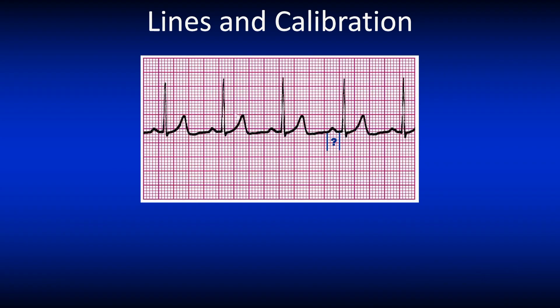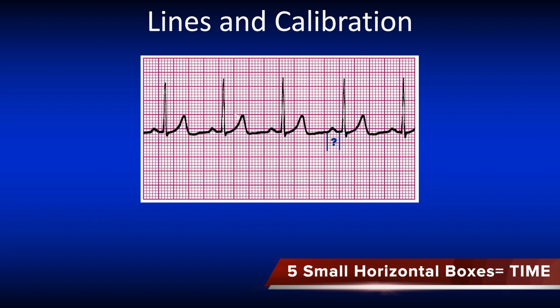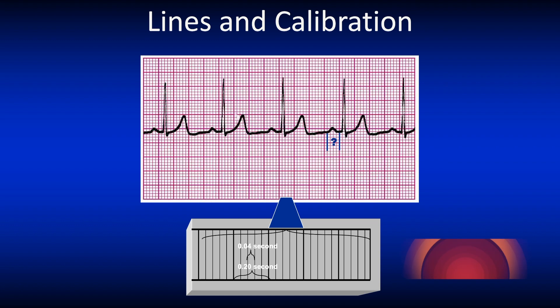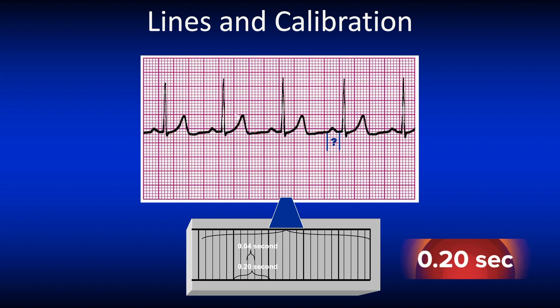Let's review the lines and calibration of an ECG strip. In one big box, you will find five small boxes horizontally in a row which represents time, and five small boxes vertically which reflects millivolts. We'll be focusing only on time during this basic ECG program. Each small box equals 0.04 seconds. So if you have five boxes in a row, it's 5 times 4 which equals 20, meaning 0.2 seconds.